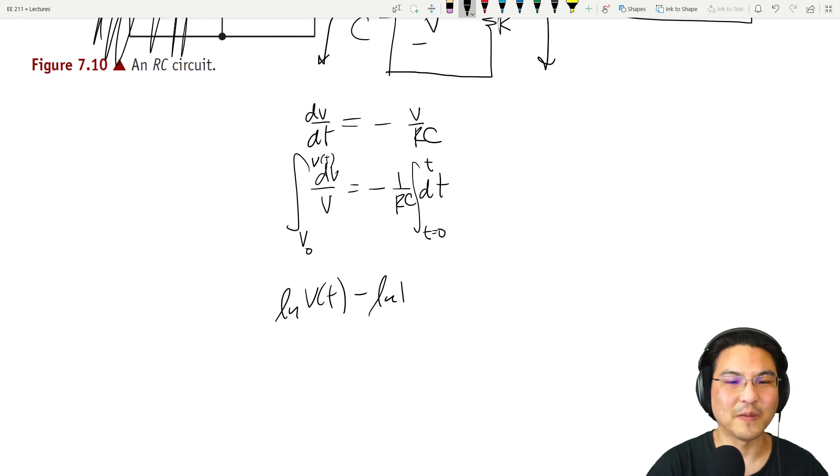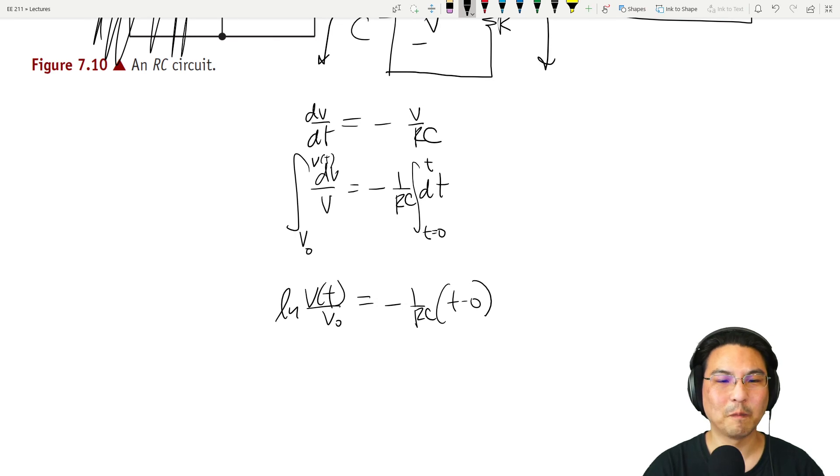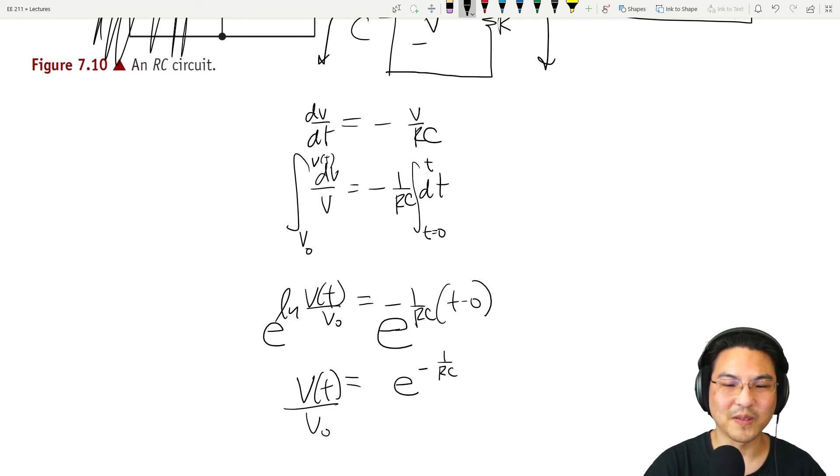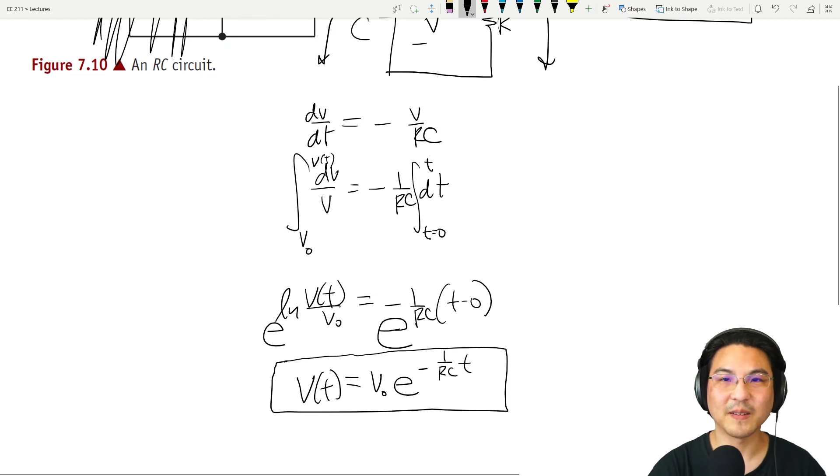Log V of t minus log of V naught, which you can always rewrite like this. And then on that side, minus one over RC, t minus zero. And then remember the trick: the inverse of natural log is exponential function. So that leaves us with V of t over V naught equals e to the minus one over RC times t. And let's just move this right here. So that's the voltage.